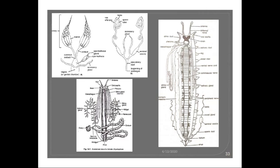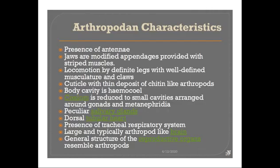Those are the main features which make Peripatus more related to the arthropods. Since Peripatus shows features similar to both Annelida and Arthropoda, it is considered a connecting link between Arthropoda and Annelida. These features are also important because the affinities of Peripatus with Arthropoda can be asked in university examinations.